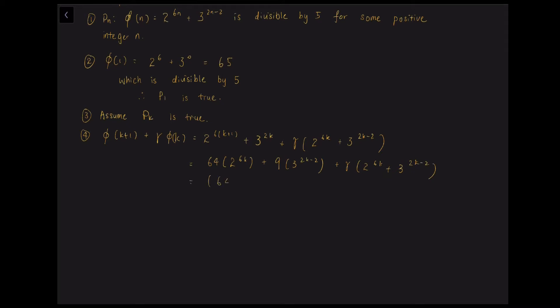So now we factorize out the 2 to the power of 6k. So we got 64 plus gamma. And we factorize out 3 to the power of 2k minus 2, and we obtain 9 plus gamma for it.